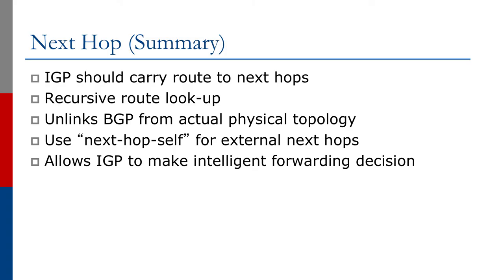To summarize: the IGP should carry routes to the next hops. We make use of recursive route lookup, which unlinks BGP from the actual physical topology. We use next-hop-self for external next hops, and all of this allows the IGP to make the intelligent forwarding decision.